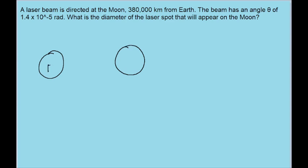An example of what this looks like is: this is the earth and this is the moon. The moon is actually much smaller than the earth, so this diagram is not drawn to scale. A laser is being shot from the earth and is going to make a spot on the moon.